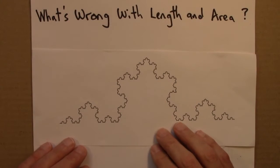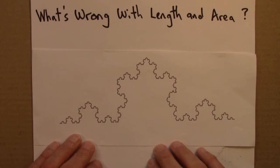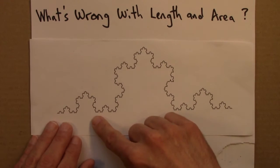So what's wrong with the idea of length and area? Why can't we apply these notions meaningfully to most fractals? Well, here's a way to think about this. So here's the Koch curve again.